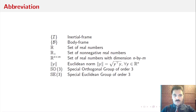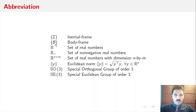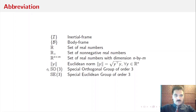Here's the set of abbreviations that we'll be using throughout the paper. I denotes inertial frame, B denotes body frame, R is the set of all real numbers, R-plus is the set of non-negative real numbers, and we have the set of real numbers with dimensions n by m. We also have the Euclidean norm, SO3, and SE3. SO3 is the Special Orthogonal Group of Order 3, and SE3 is the Special Euclidean Group of Order 3.